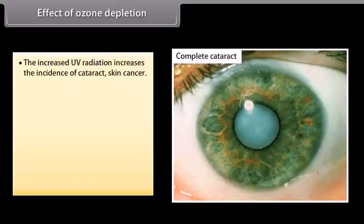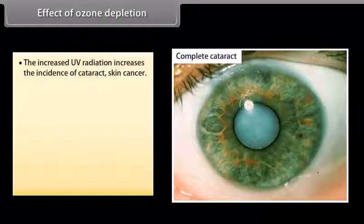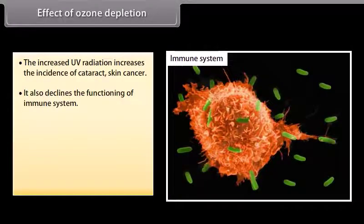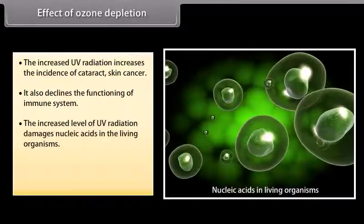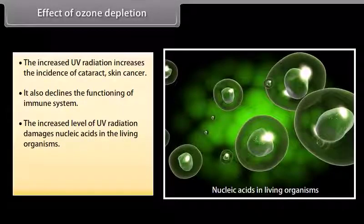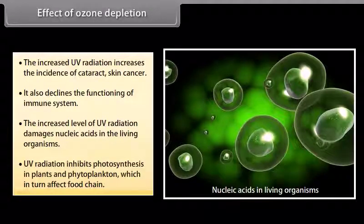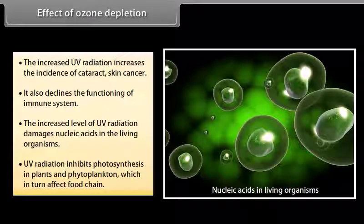Effects of ozone depletion: increased UV radiation increases the incidence of cataracts and skin cancer, and also declines the functioning of the immune system. Increased levels of UV radiation damage nucleic acids in living organisms. UV radiation inhibits photosynthesis in plants and phytoplankton, which in turn affects the food chain.